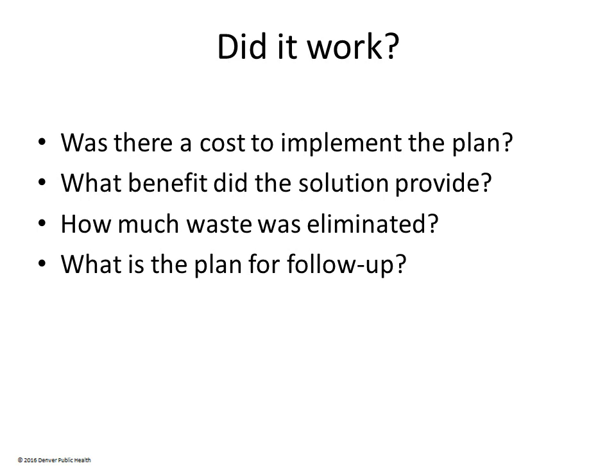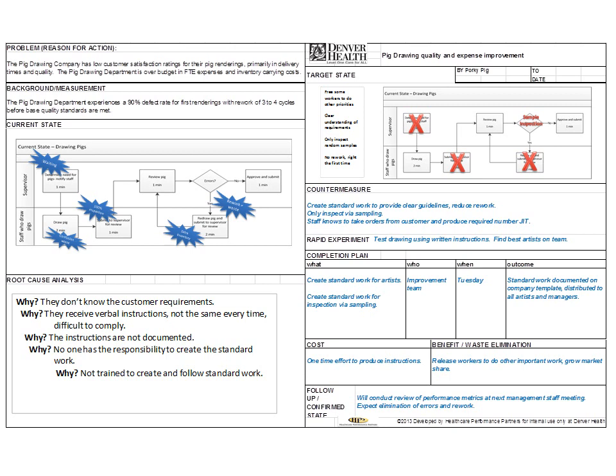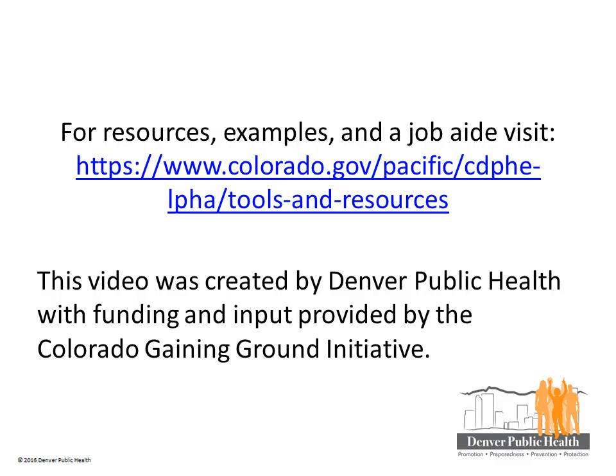Finally, the last sections of the A3 document any cost, benefit, amount of waste eliminated, and a schedule for follow-up at 30, 60, and 90 days to ensure you are seeing the results you wanted. Congratulations — you have now completed your first A3! Keeping all of your work in one place and going through this structured problem-solving process makes it an excellent communication tool to explain why you are changing things and to document your success. Many people have found this tool useful, and we hope you do too. For more resources, examples, and a job aid on how to complete an A3, please visit the website below.